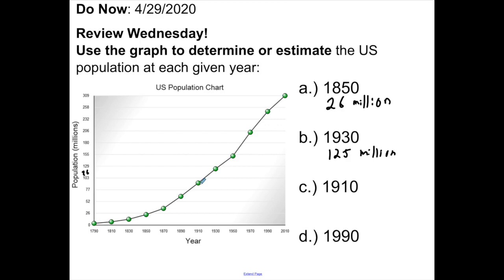1910 — I'd say it's right in the middle of 77 and 103. The gap between them is 26, so right in the middle would be going up by half that, which is 13. So I'd say maybe it's like 90 million in 1910.